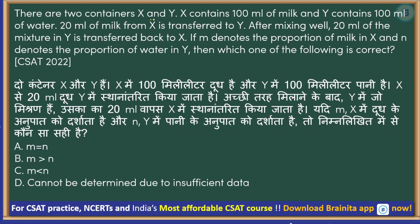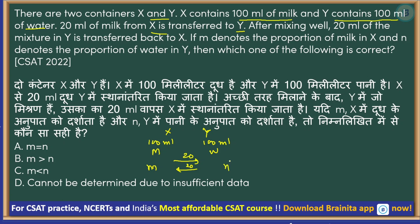Next question: There are two containers X and Y. X contains 100 ml of milk and Y contains 100 ml of water. 20 ml of milk from X is transferred to Y. After mixing well, 20 ml of the mixture in Y is transferred back to X. If m denotes the proportion of milk in X and n denotes the proportion of water in Y, then which of the following is correct: m = n, m > n, m < n, or cannot be determined?